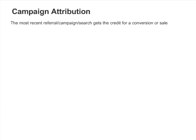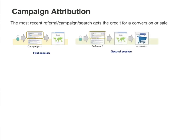By default, Google Analytics attributes a conversion or sale to the campaign that most recently preceded the conversion or sale. For example, if a visitor clicks on an AdWords ad — Campaign 1 — in the first session, and then later returns via a referral to purchase something — Referrer 1 in the second session — the referral will get the credit for the sale.